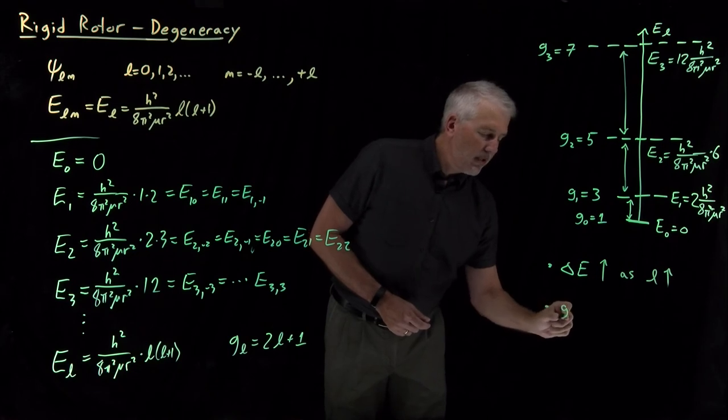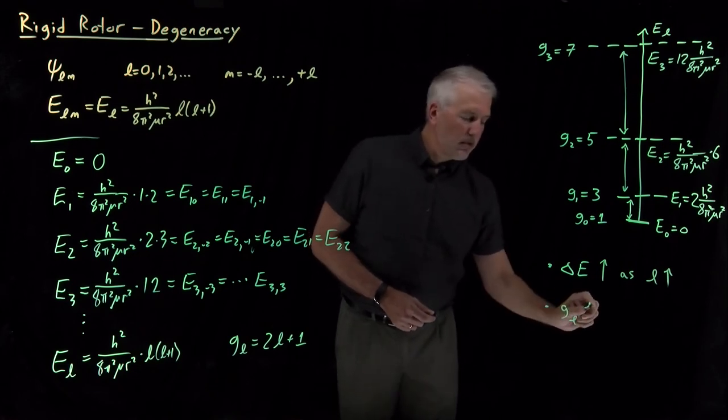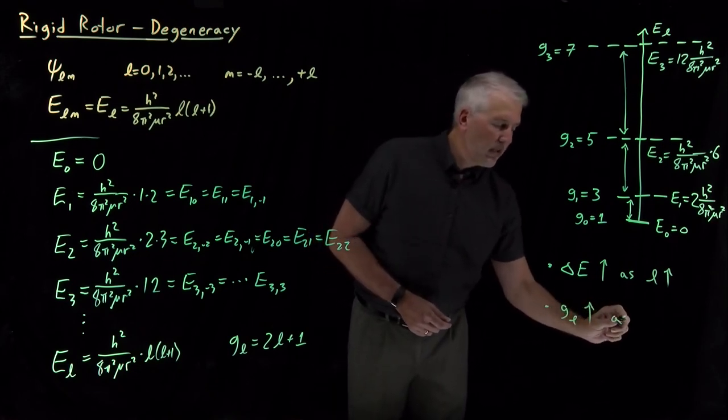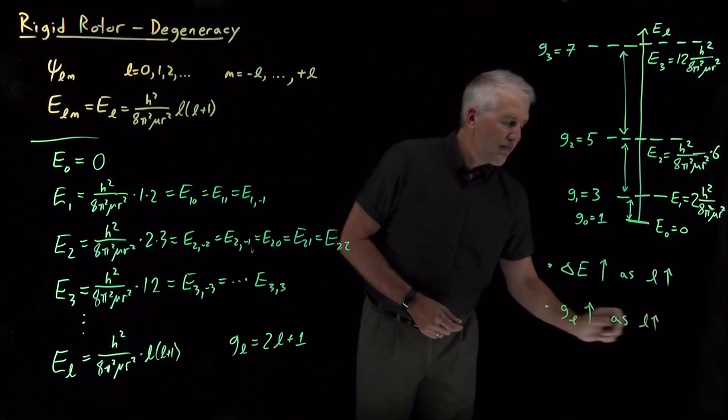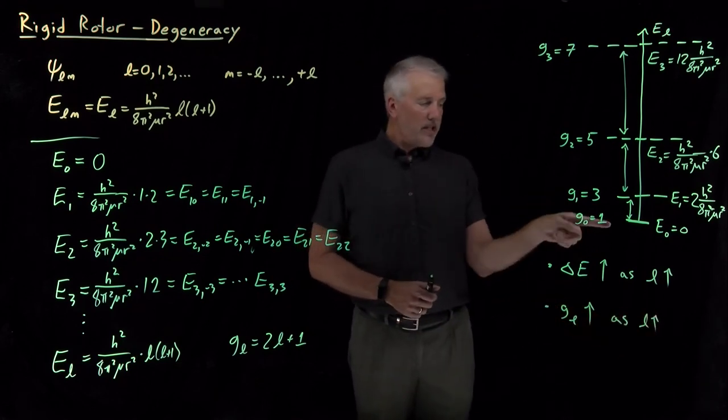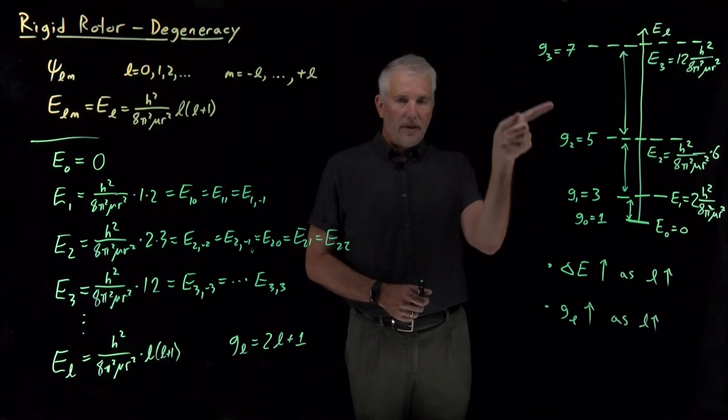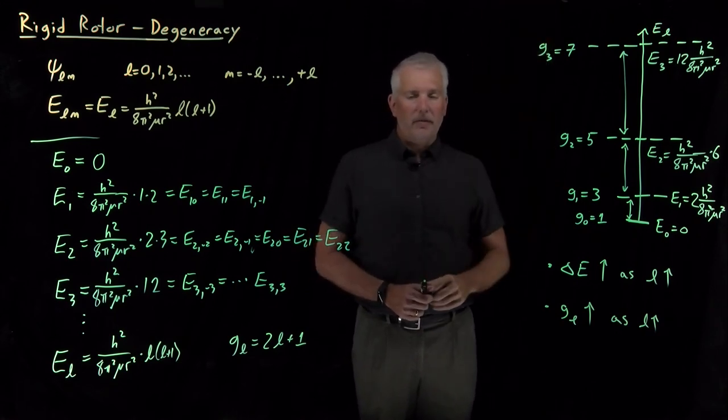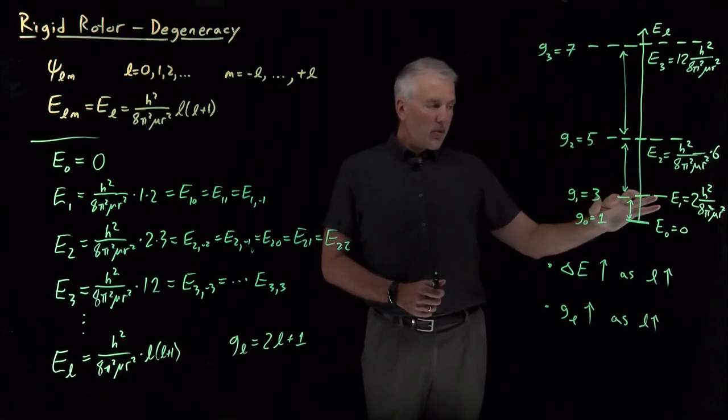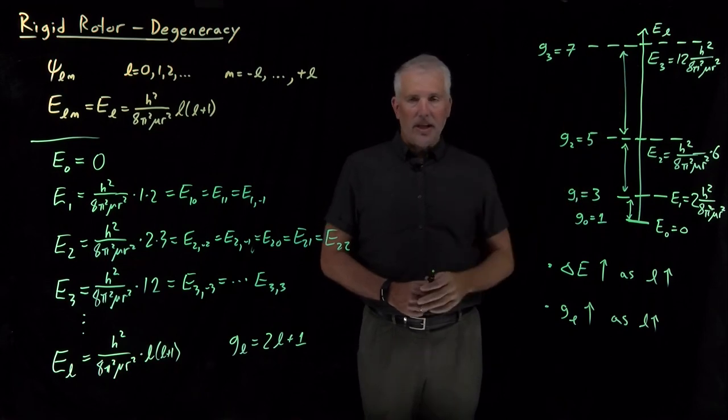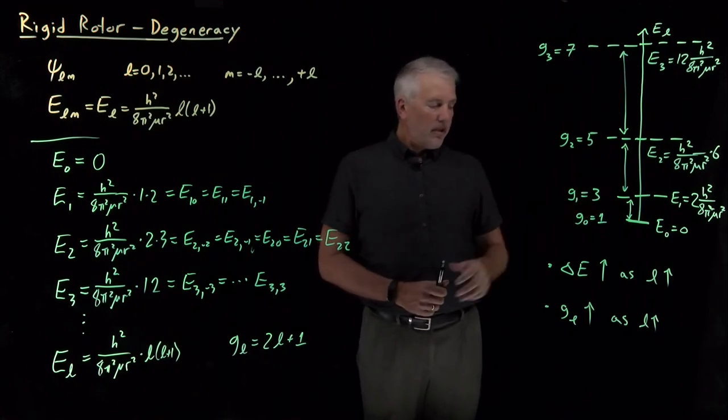Similarly, the degeneracy of the L level is also increasing as we climb the ladder. The degeneracy goes from 1 to 3 to 5 to 7, climbing again every rung up this ladder we go. So, the more states there are that have the same energy, the higher the degeneracy of that rung on the ladder.